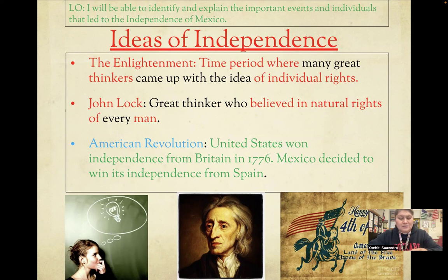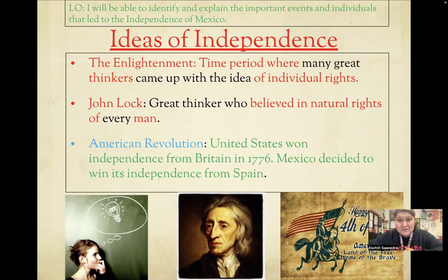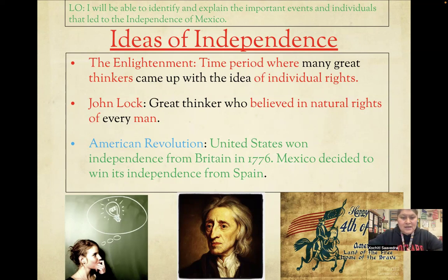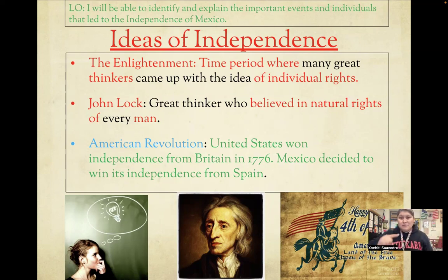Because of these ideas happening within the Enlightenment time period, the American Revolution happens. When the United States wins their independence from Britain in 1776, Mexico — or the people of New Spain — see this as an example. They see it as a beacon of hope and decide: if they can do it over there, we can do it over here too. Let's break away from Spain and create our new government.